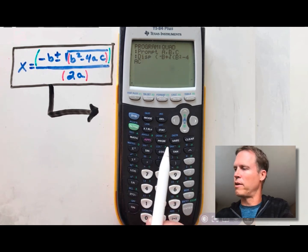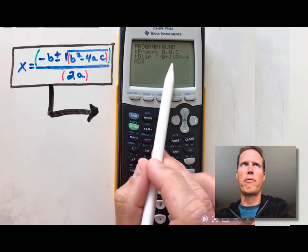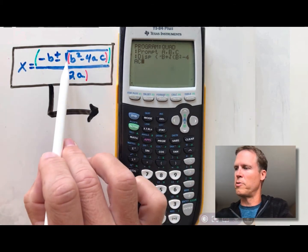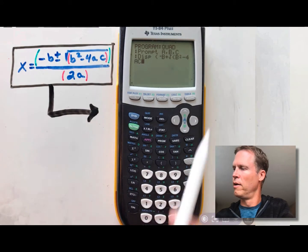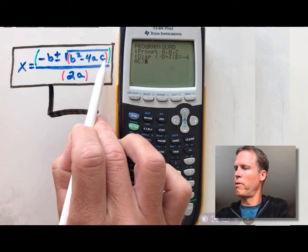Now, notice I have a parentheses started for the square root also. That's the red one that you see here. So I need to close the parentheses for the square root first, and then close the parentheses for the numerator.